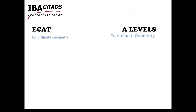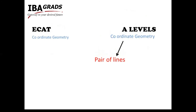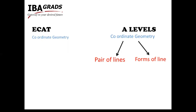Then Coordinate Geometry — we study this in A-Levels, but some sub-topics are missing. These are the Pair of Lines and Forms of Lines, which are missing in A-Levels. These are included in Inter Board and Federal Board, and in ECAT there are compulsorily 2–3 MCQs from these sub-topics.